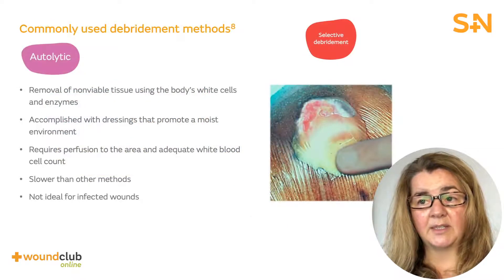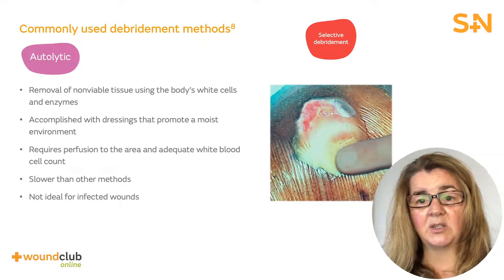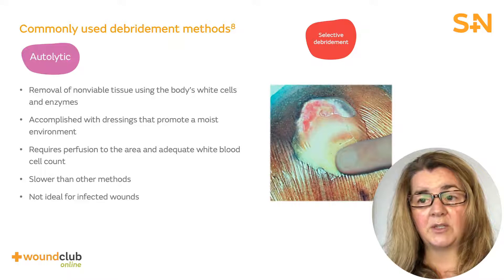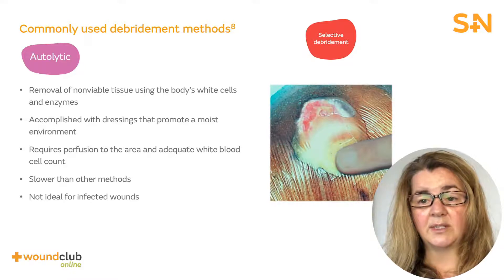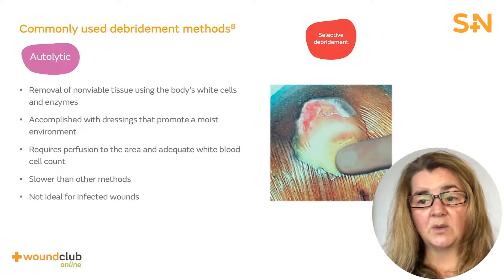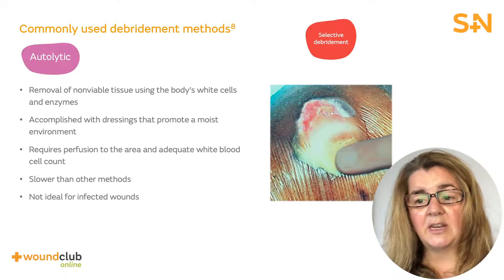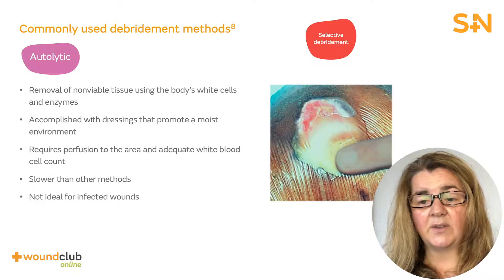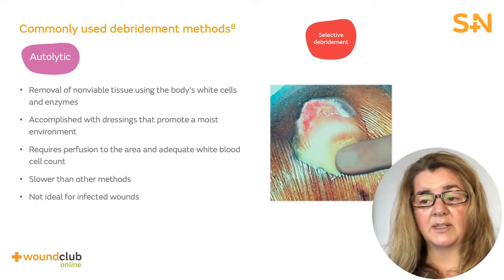Autolysis or autolytic debridement involves the body's own white blood cells and natural enzymes to destroy and remove non-viable tissue while leaving healthy tissue intact. During the inflammatory phase of healing, autolytic debridement occurs naturally in patients with adequate leukocyte function and a moist vascularised wound. Autolysis is slow and therefore not ideal for infected wounds. Any dressing that maintains a moist environment can help promote autolytic debridement.